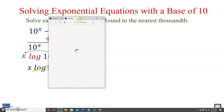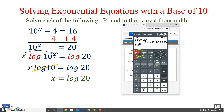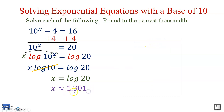Let's go to the calculator. Log 20 gives us approximately 1.301. Let's check: 10 to the power of the answer, then subtract 4, and we get 16. So x equals 1.301.